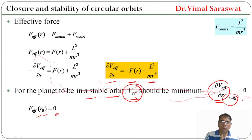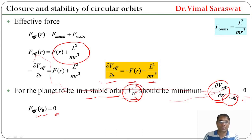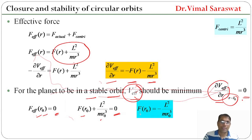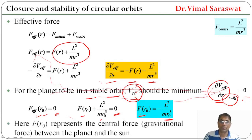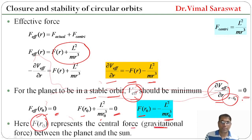Since F_effective = F(r) + l²/(mr³), setting this to zero at r = r₀ gives F(r₀) + l²/(mr₀³) = 0, or F(r₀) = −l²/(mr₀³). Here F(r₀) represents the central gravitational force between the planet and the sun. The negative sign shows that the central or gravitational force should be attractive.